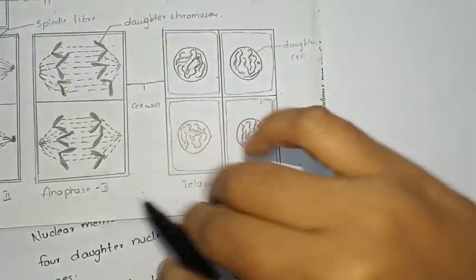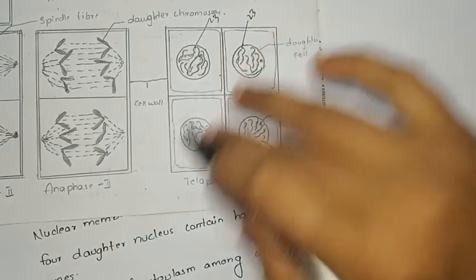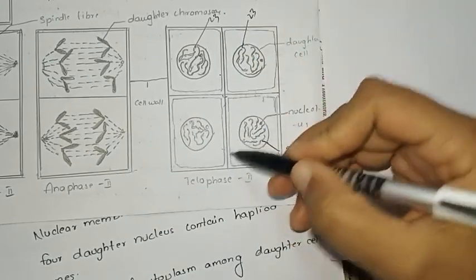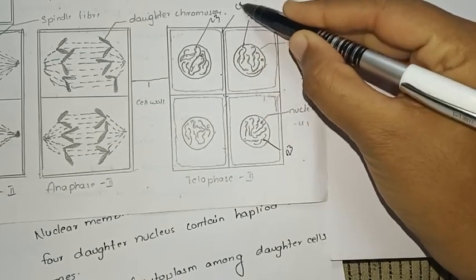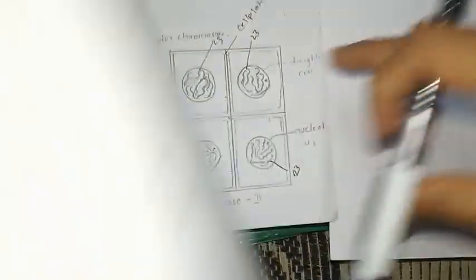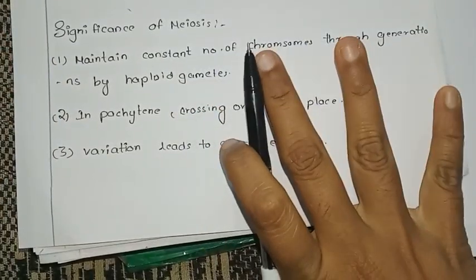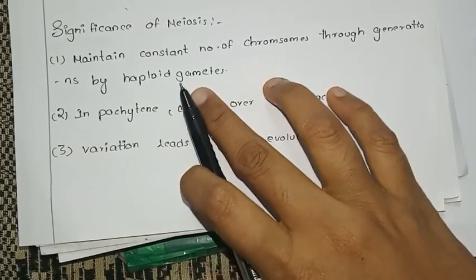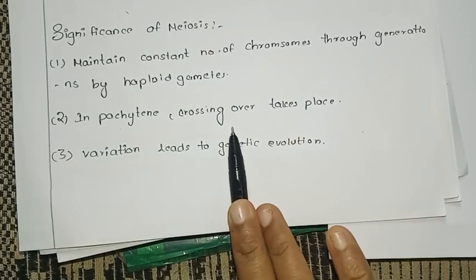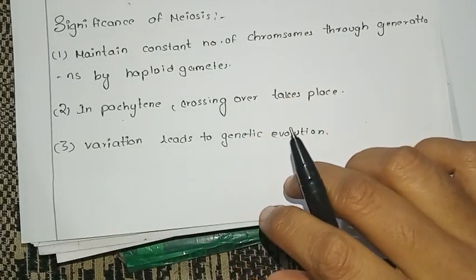The four daughter cells are haploid. Humans have 46 chromosomes, so after meiosis each cell has 23 chromosomes. The DNA is divided by cell and nucleus growth. Then cytokinesis occurs — in plant cells, a cell plate is formed, while in animal cells, cytokinesis occurs by cleavage. In Pachytene phase, crossing over is formed.